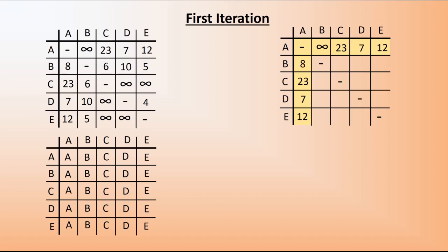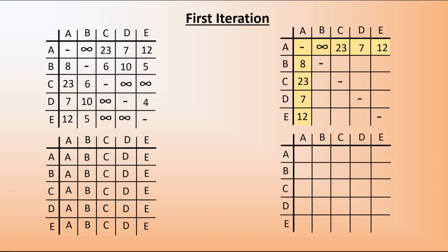Similarly, we create a route table. Because we're not going to be making any changes to the row and column headed by A, we can copy those straight away from the existing table. Also, because each of those dashes for B to B, C to C, and so on are not going to be looked at, we can copy those straight in as well. We're now in the position where we only have 12 cells in each table which are blank — these are the ones we're going to seek to fill.